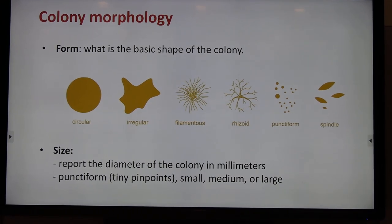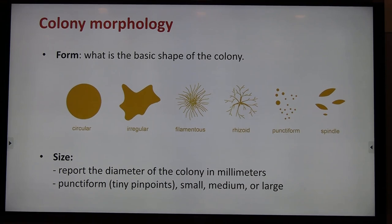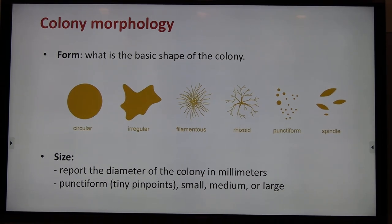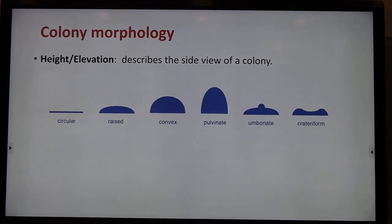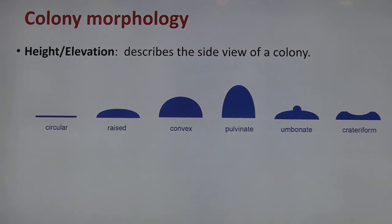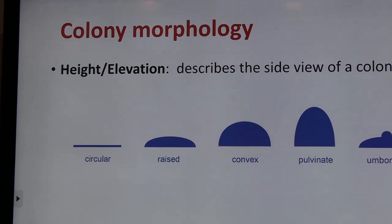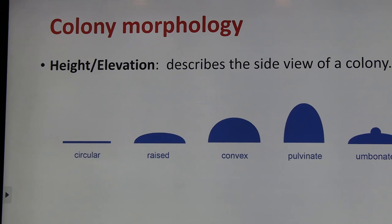Regarding size of the colony, it can be described in two ways. The more accurate way is to use a ruler and measure the diameter in millimeters. The second way is to use descriptive words like tiny, small, medium, or large. The next feature is called height or elevation — it describes a side view of the colony. When trying to assess elevation, you really need to view through the end of the petri dish and describe it in detail.